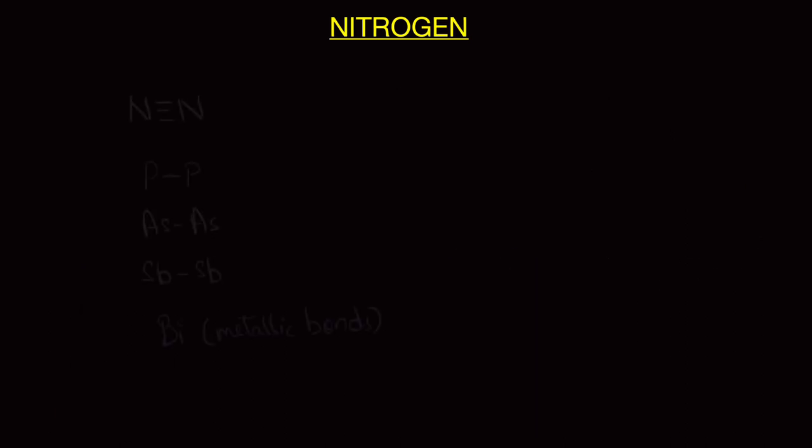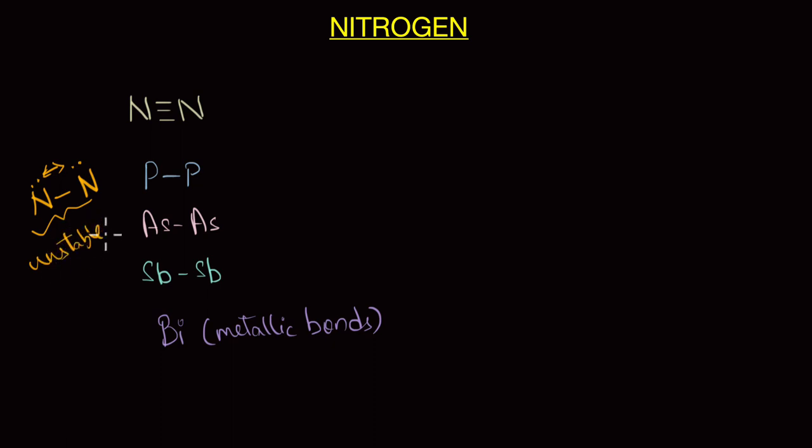And this is why all the other members form single bonds, whereas nitrogen forms triple bonds. And if you look at the single bond of nitrogen, it is extremely unstable. You see, nitrogen atom is really very small and when it forms a single bond, the non-bonding electrons are too close to each other and they repel each other very strongly. And this inter-electronic repulsion is what makes nitrogen single bonds extremely thermodynamically unstable.